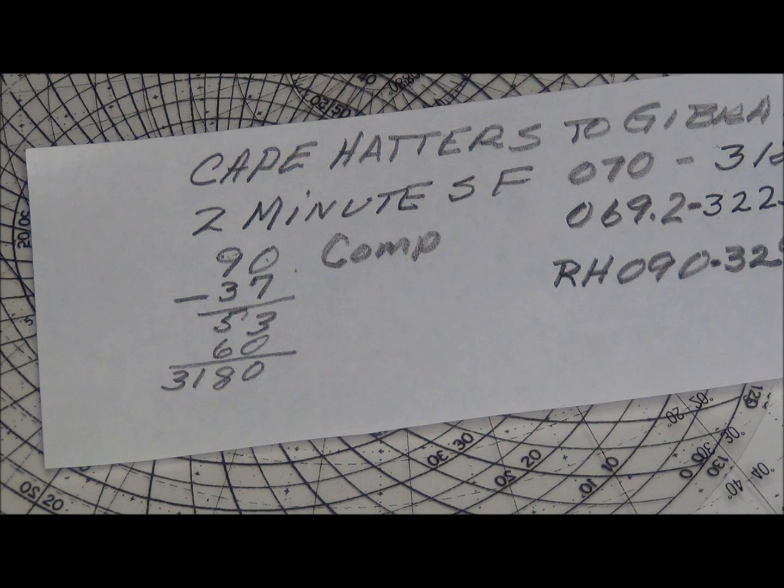So each degree is equal to 60 nautical miles. So by multiplying that by 60, I came up with my 3,180, which is very close. My 70 instead of 069.2 and my 3,180 instead of 3,225 is very close.